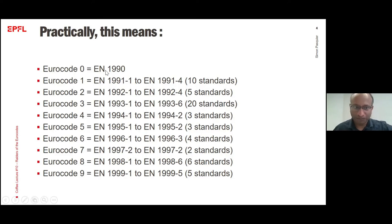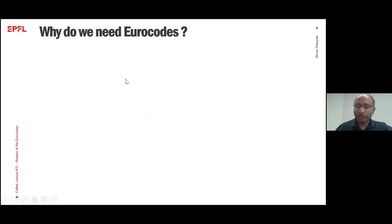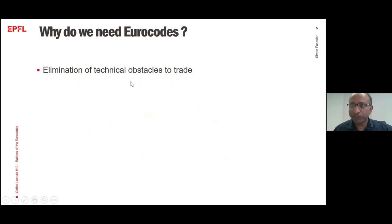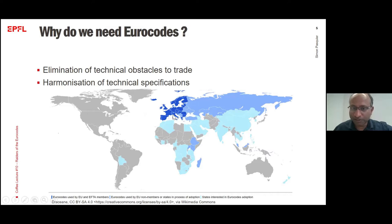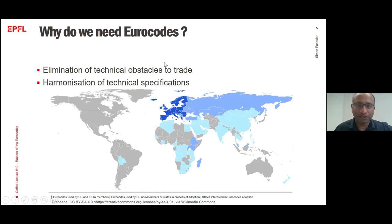Eurocodes are European norms. But why do we need Eurocodes? There are two reasons. The first is to facilitate trade — if you want to trade with another European country, you have to use the same standards. The second reason is to normalize technical specifications all around Europe. When I speak about Europe, this includes all European countries plus Switzerland and Sweden. Looking at this map, you can see that today Eurocodes are used by many European countries, and other countries around the world are increasingly interested in using these specifications as well.